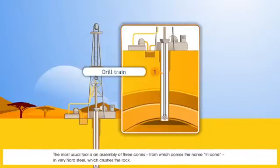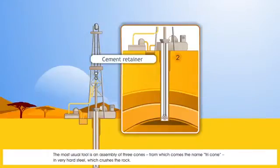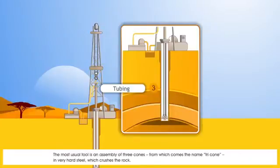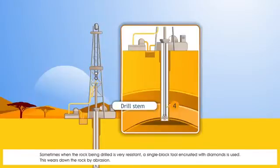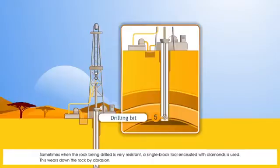The most usual tool is an assembly of three cones, from which comes the name tricone, in very hard steel, which crushes the rock. Sometimes, when the rock being drilled is very resistant, a single block tool encrusted with diamonds is used. This wears down the rock by abrasion.